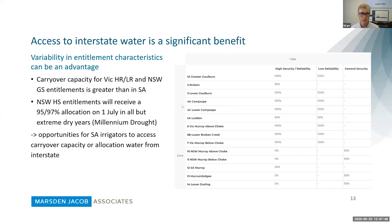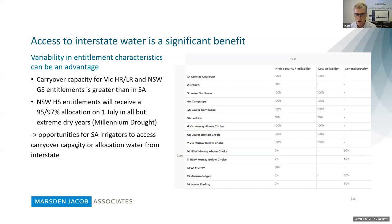It's also important to think about how entitlements work and their characteristics — things like carryover capacity available against different entitlement types and class types. If you've got spare water this year and want to carry it over to next year, you could carry it over on your existing allocation assuming it has that ability, or alternatively look for an opportunity to carry it over interstate on another licence.